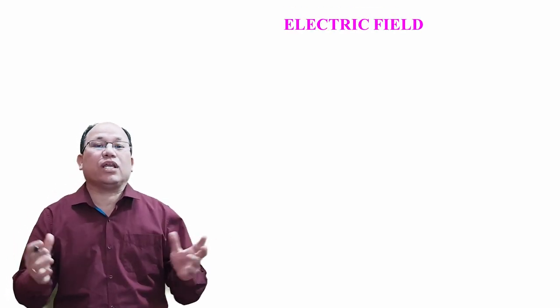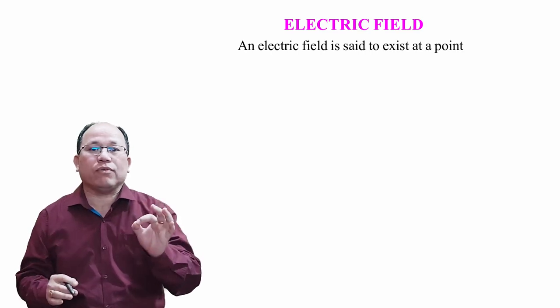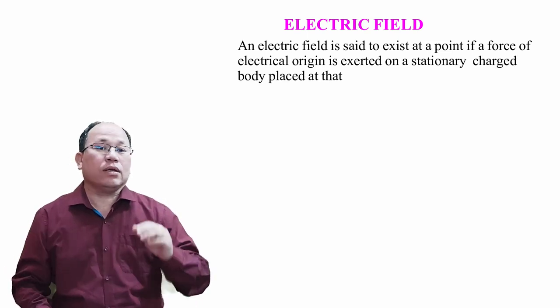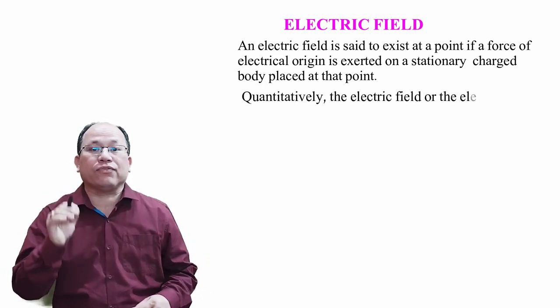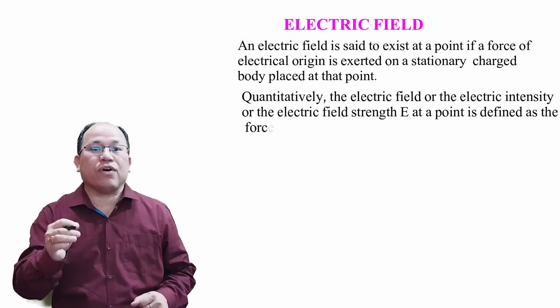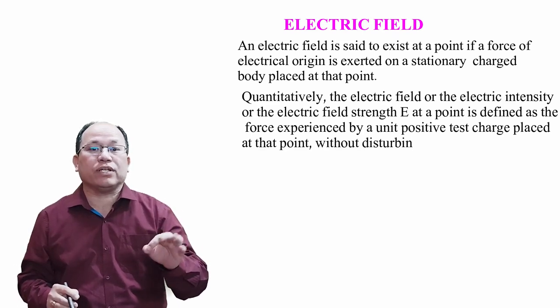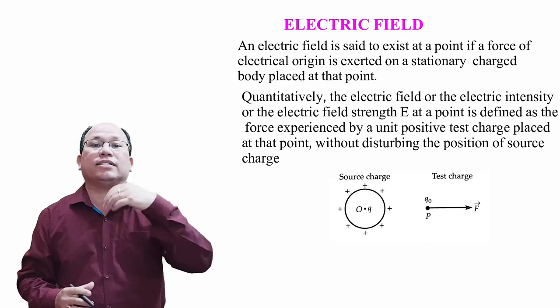Good morning. Let us come to the new topic: electric field. Electric field is said to exist at a point if a force of electrical origin is exerted on a test charge body placed at that point. Quantitatively, the electric field intensity represented by E at a point is defined as the force experienced by a unit positive test charge placed at that point without disturbing the position of the source charge. Consider a source charge, let us say plus Q.